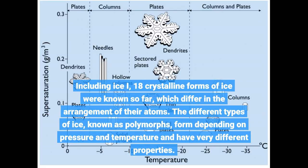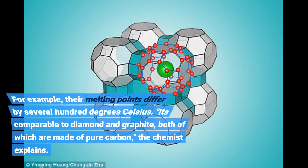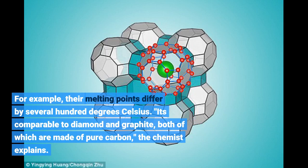Including ice, 18 crystalline forms of ice were known so far, which differ in the arrangement of their atoms. The different types of ice, known as polymorphs, form depending on pressure and temperature and have very different properties. For example, their melting points differ by several hundred degrees Celsius. It's comparable to diamond and graphite, both of which are made of pure carbon, the chemist explains.